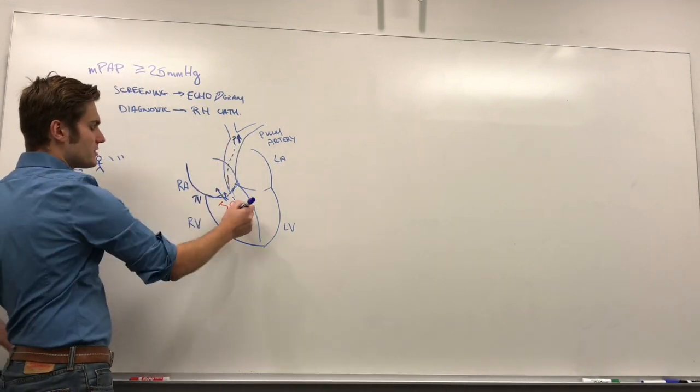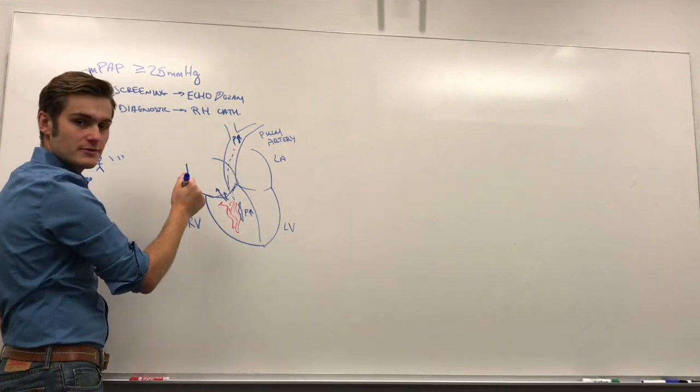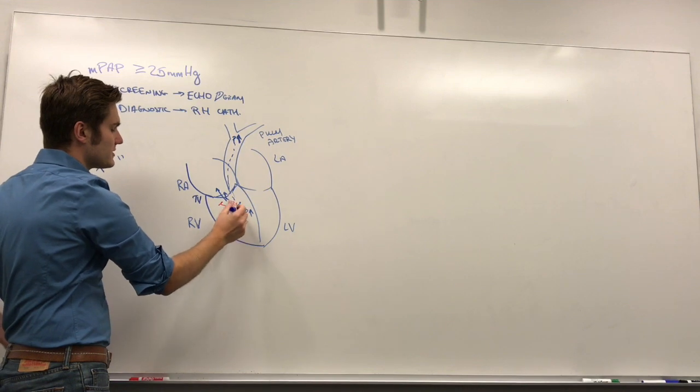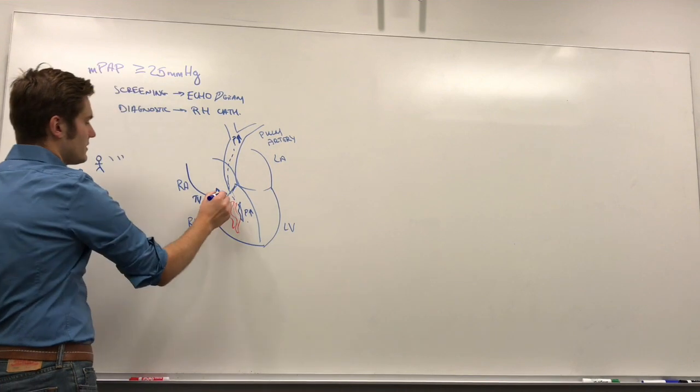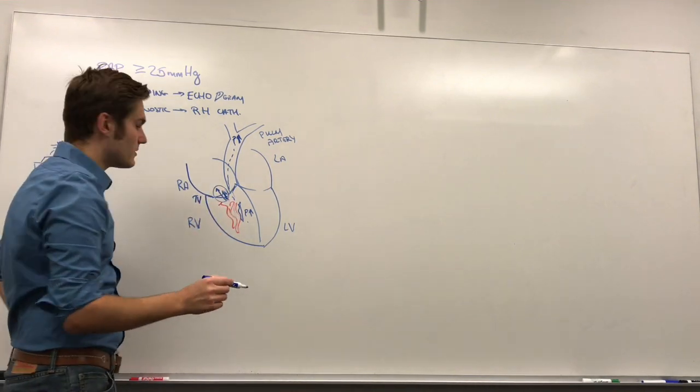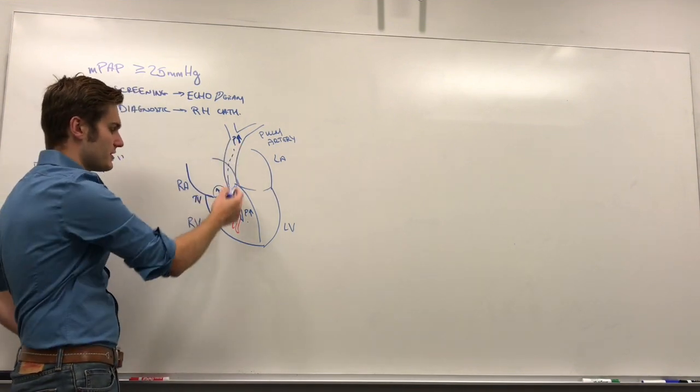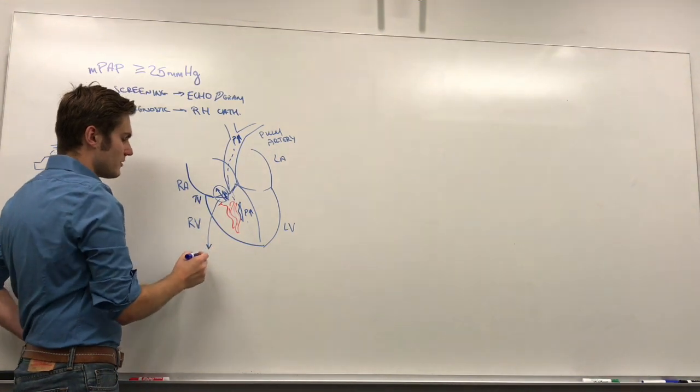If you have increased pressure here in the pulmonary artery, hence pulmonary arterial hypertension, the pressure here is going to increase and this kind of trickle of blood might increase. This right here is very important because if you think about it, this actually could serve as a proxy for the pressure here.